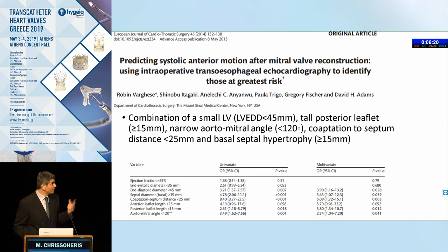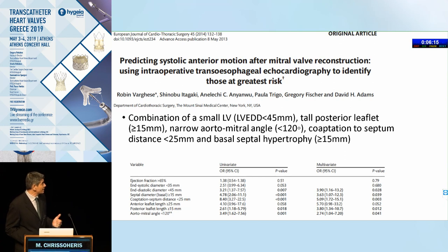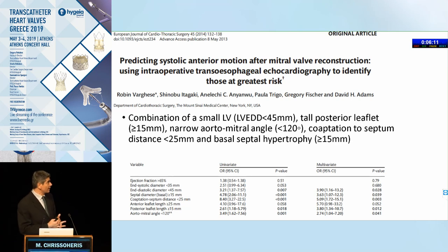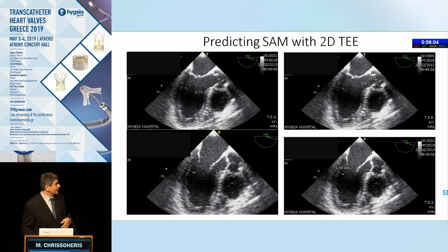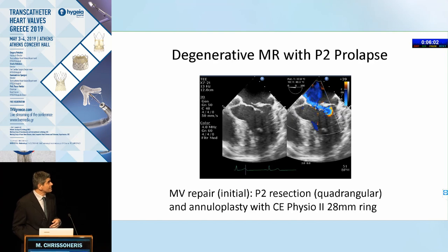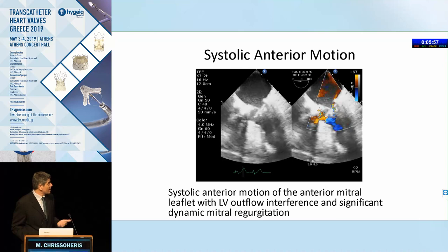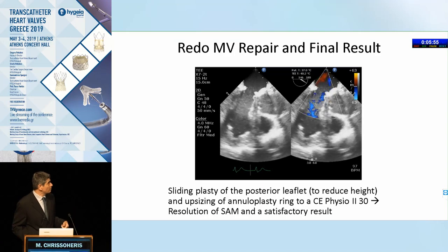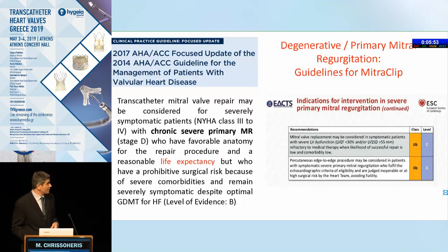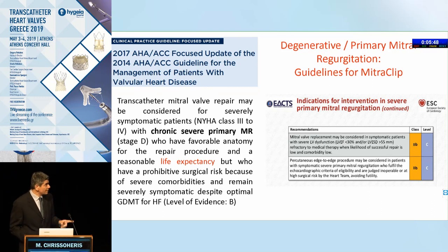In addition, we need to alert the surgeon to the risk of systolic anterior motion (SAM). Data show that a small left ventricle, a tall posterior leaflet, a narrow aortomitral angle, a coaptation-to-septum distance of less than 25 mm, or LV hypertrophy of the basal septum may indicate significant risk of SAM. Here is a patient with a P2 prolapse repair who developed severe SAM at the end of the procedure, requiring return to bypass for correction.